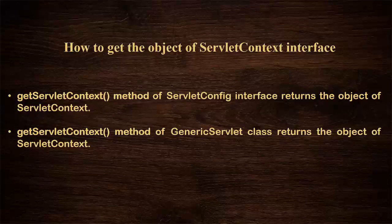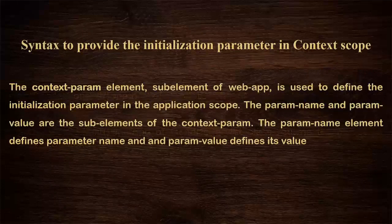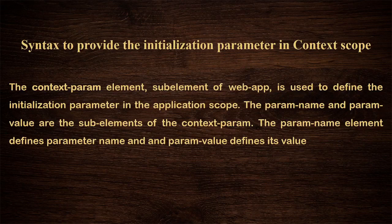We talk about how to get the object of the Servlet Context interface. The getServletContext() method of the Servlet Context interface returns the object of Servlet Context. The getServletContext() method of GenericServlet also returns the object of Servlet Context. The context-param element is used to define the initialization parameters in the application scope. The param-name and param-value are the sub-elements of context-param. The param-name element defines the parameter name and param-value defines its value.